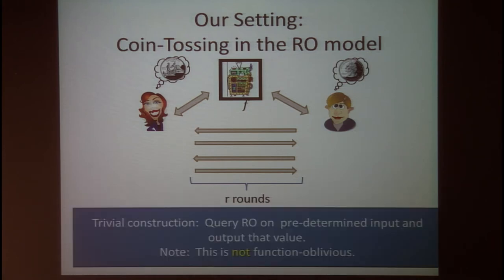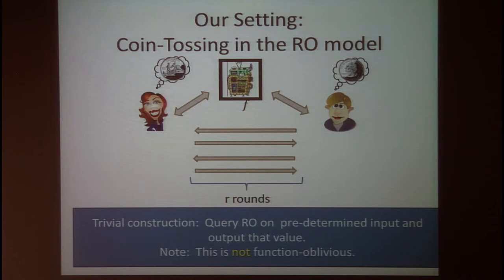In the random oracle model there is a trivial construction where both parties query the random oracle on a predetermined input and output that value as the coin toss. However, this protocol is not function oblivious — the output depends on the specific instantiation of the random oracle — so we do not have to worry about this type of cheat in our result.